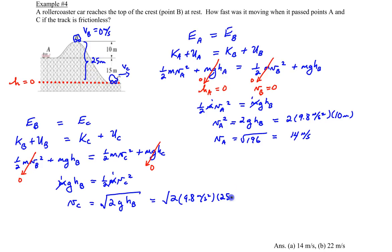So 25 meters in here. And we're going to be taking the square root of that answer. That's the square root of 450 which gives you 22.1 meters per second. And that's it for example number 4.